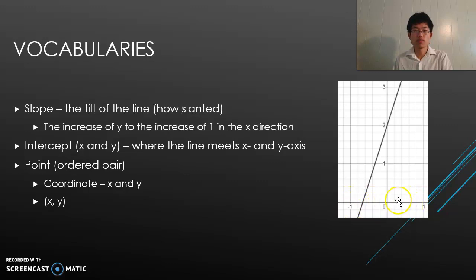The last one is point, sometimes called ordered pair, and it's usually in this form: x comma y within parentheses. This x is the x-coordinate and y is the y-coordinate.